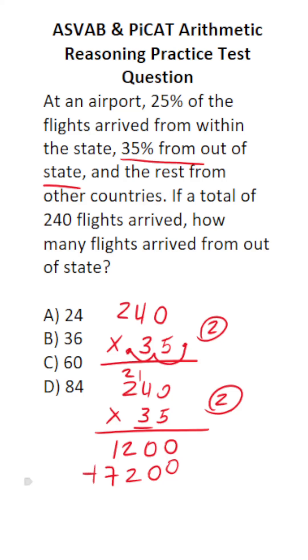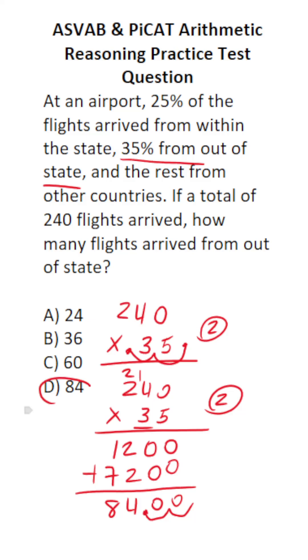Let's add these together now: zero, zero, four, eight. Bring in our two decimals — one, two. You can clearly see that 84 flights arrive from out-of-state.